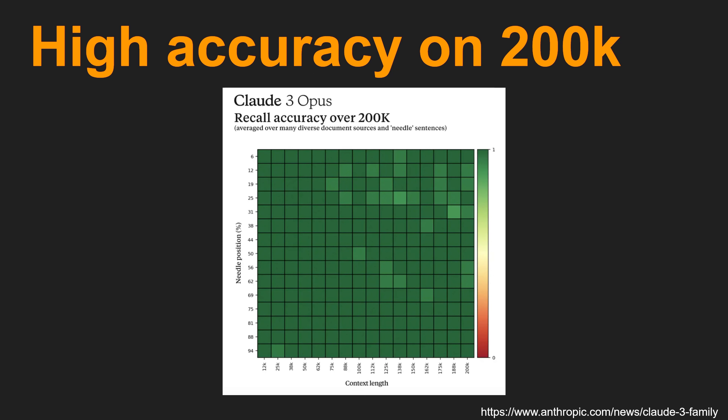First, we can see almost perfect accuracy from small questions to 200K token-length inputs, which is almost 300 pages of a book. What this means is you can collect a month of stock trading data and use it to get actual stock analysis for your future trading, which is more realistic than my demo.